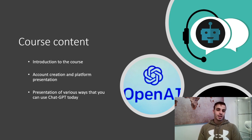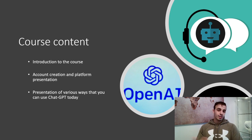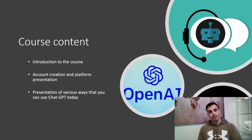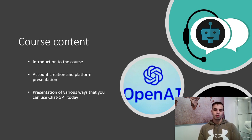So what exactly will be the course content? First, we're going to start with an introduction — which is what we're doing right now, presenting the course and what you'll learn. Then in the next class, we'll have account creation and platform presentation. I'll do a quick presentation of ChatGPT and how it works. To create your account, you will need two things: a cell phone and a Microsoft account. They will ask you to verify your phone number to get access to ChatGPT.